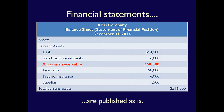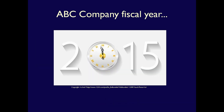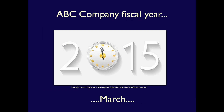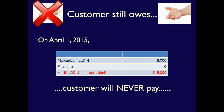The customer is definitely paying late, but ABC believes that they will pay. ABC Company publishes their financial statements at December 31st, 2014, and their accounts receivable balance is $360,000 and their sales are $1,450,000. Now ABC's 2015 fiscal year starts — January, February, and March go by, and the customer doesn't pay. Finally, on April 1st, ABC Company is sure that the customer will never pay, and they decide to write off the account. The accountant, who doesn't know much about uncollectible accounts, does the following entry.